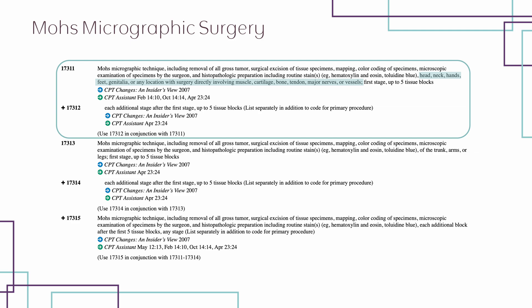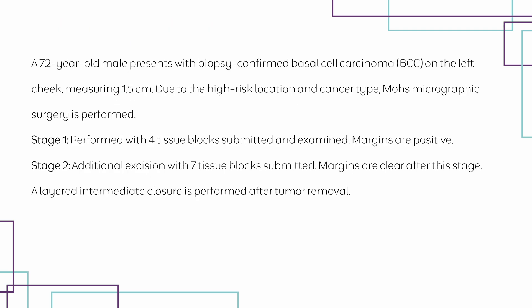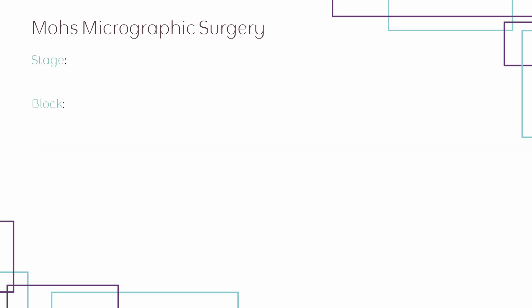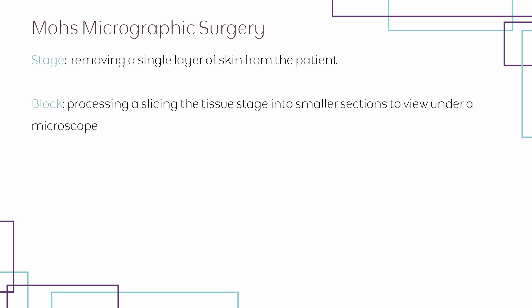Next, we need to determine the number of stages and blocks performed. We have two stages: stage one has four tissue blocks and stage two has seven tissue blocks. A stage is when the surgeon removes a piece of tissue from the patient. A block is when the surgeon acts as the pathologist and slices the stage into smaller pieces to be viewed under the microscope to determine if the margins are clear. If margins are not clear, the surgeon removes another stage and breaks it into further blocks.